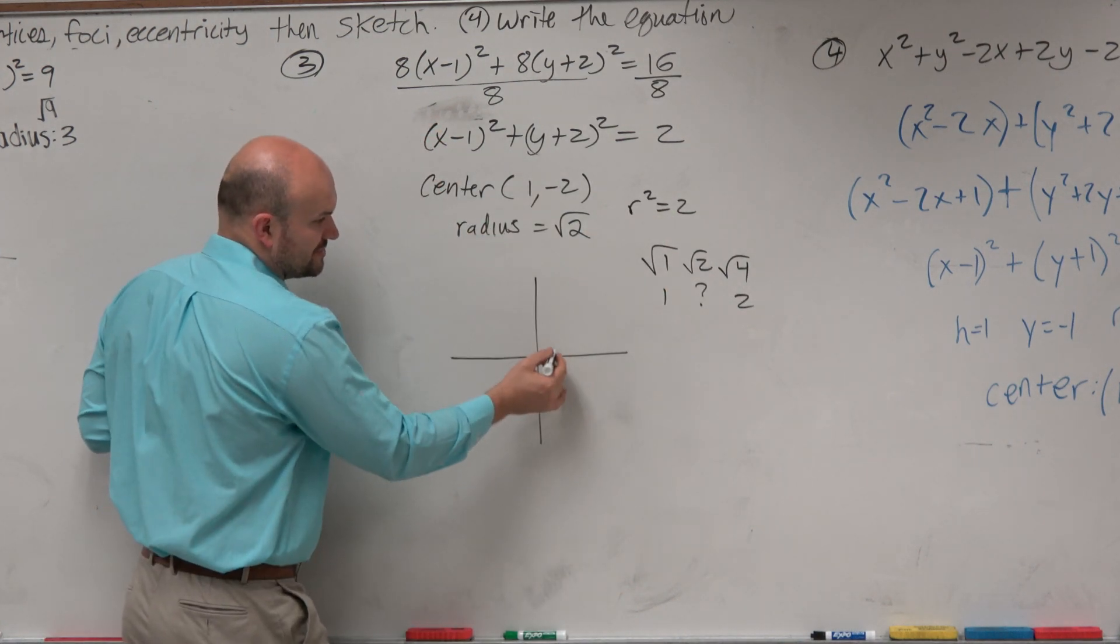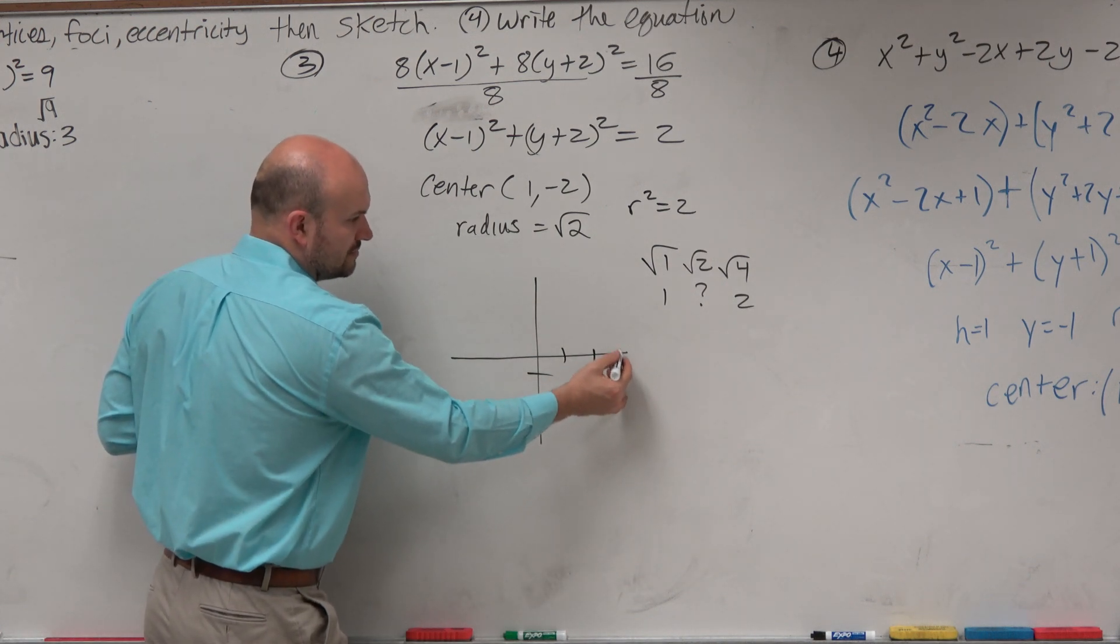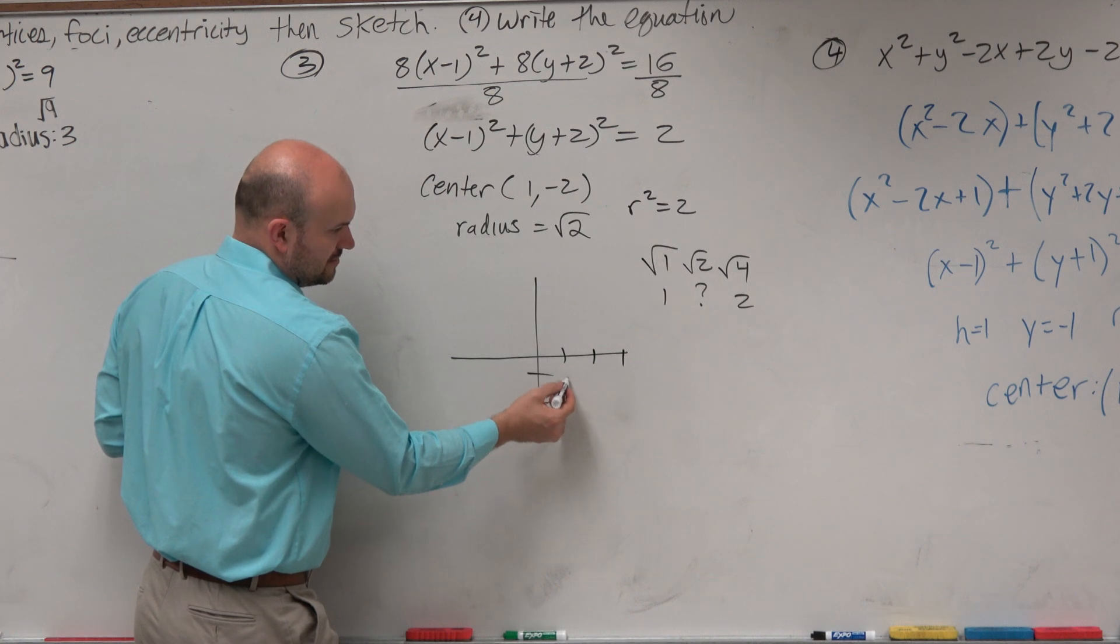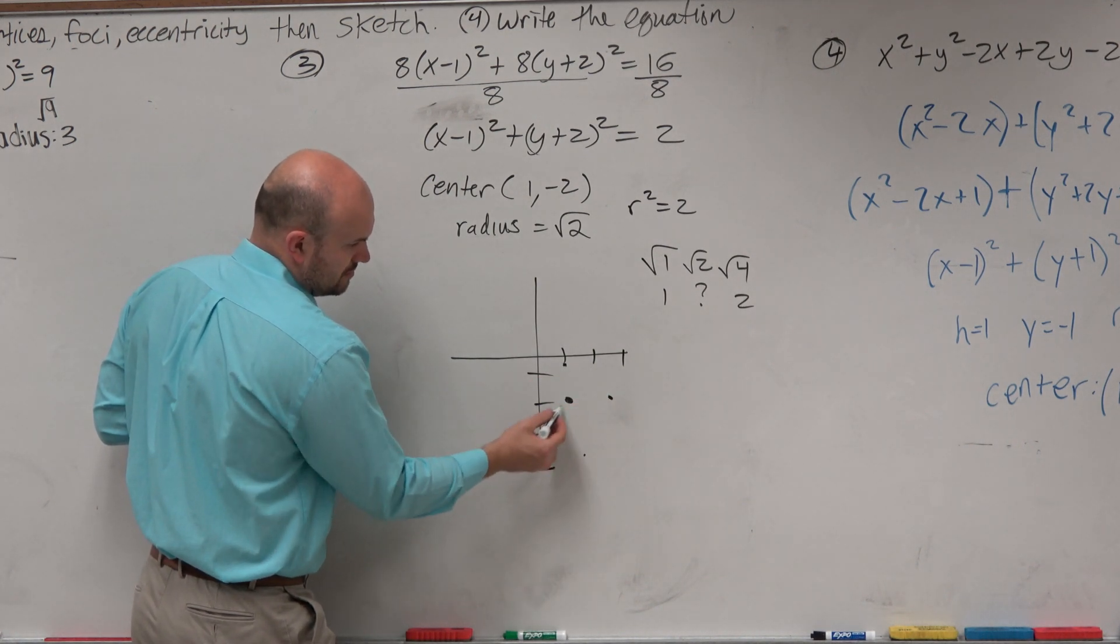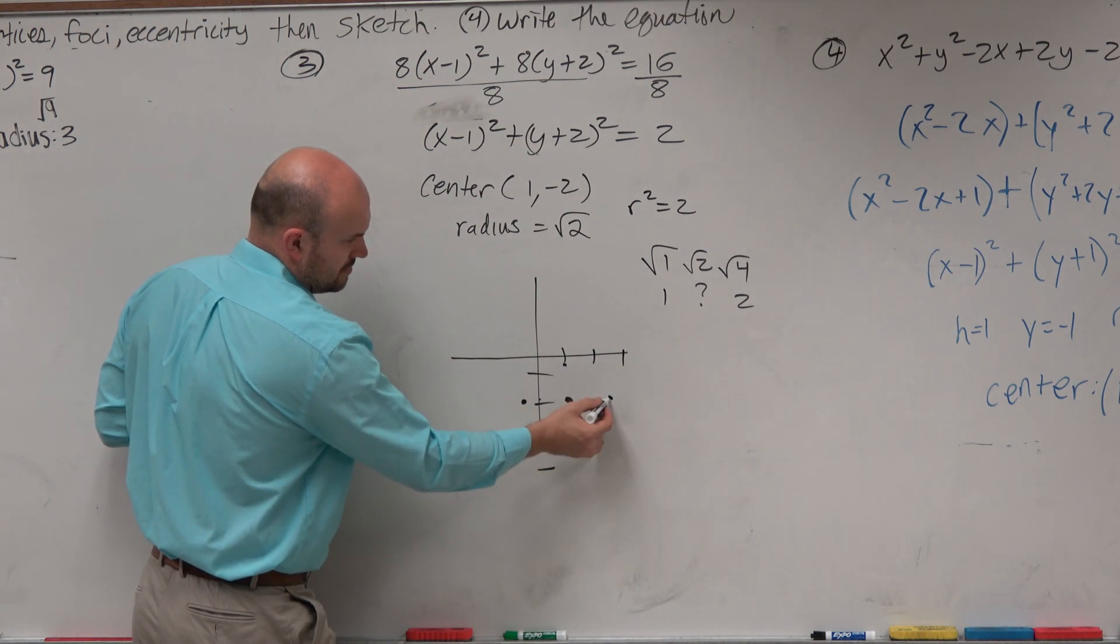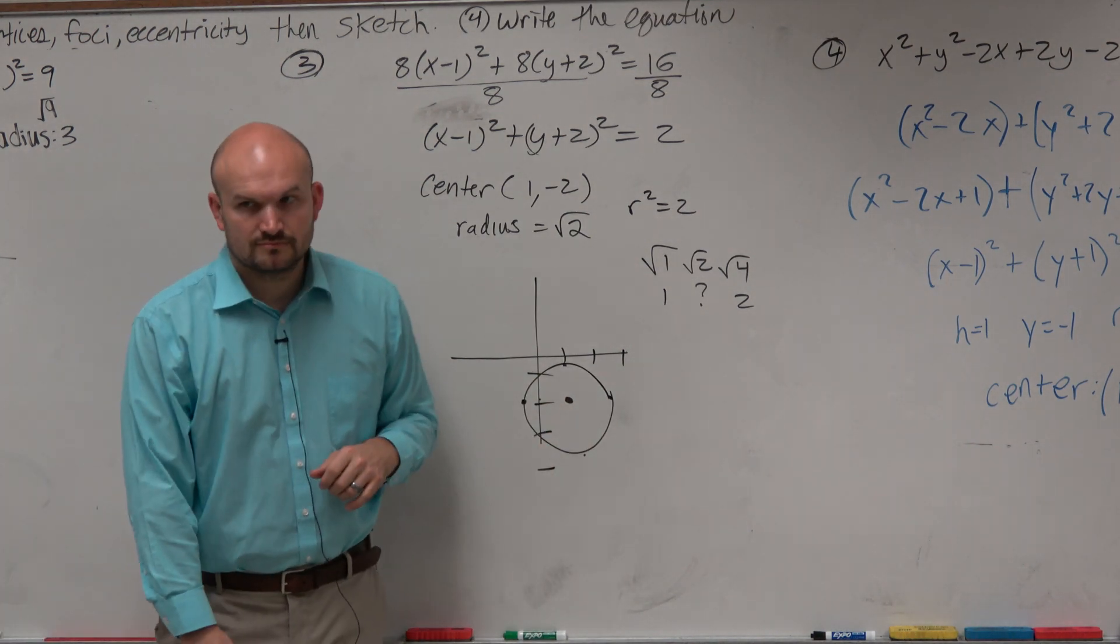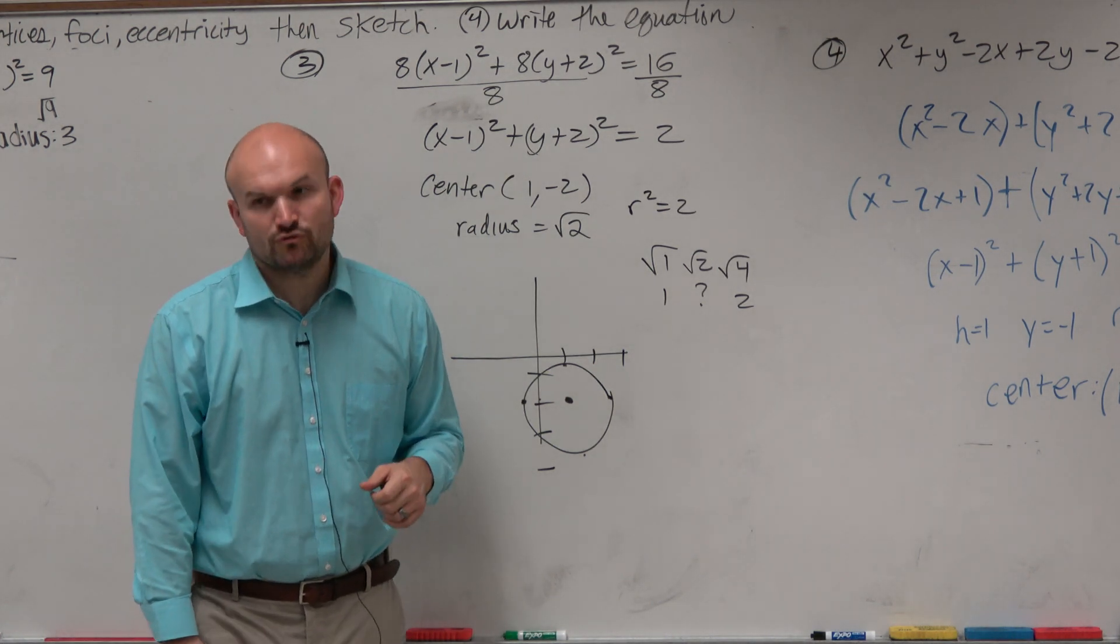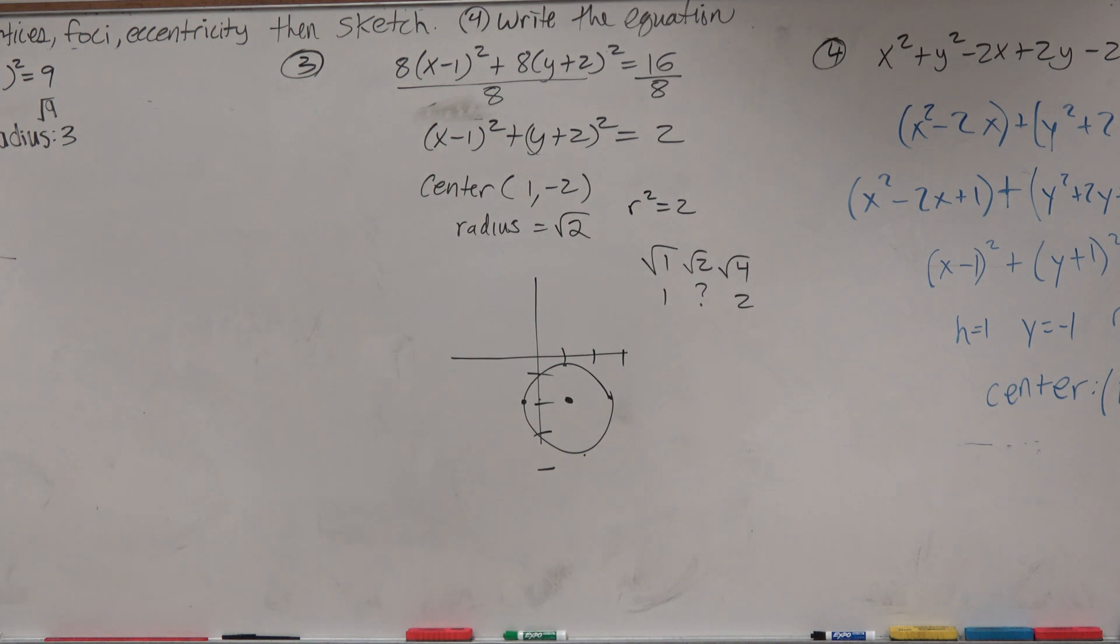So we plot the center, which is (1, -2). And then basically, you're just going to go over from there, a quarter or so, something roughly like that. Roughly, OK? Just give me roughly. That's all I'm looking for.